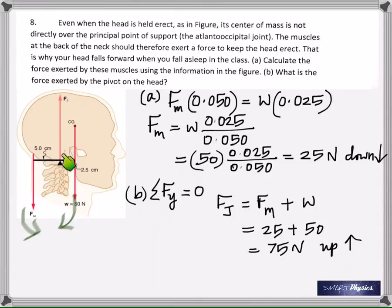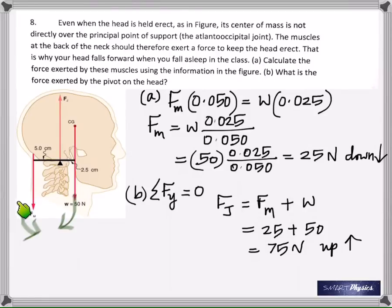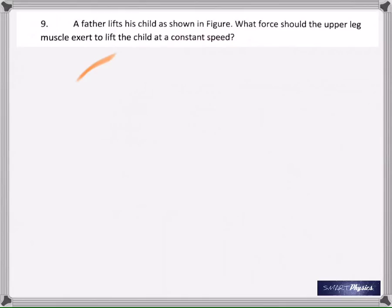To find the force at the joint, remember that the total force up must equal the total force down. So the joint force Fj is the sum of the weight and the muscle force, giving 75 Newtons acting upward.